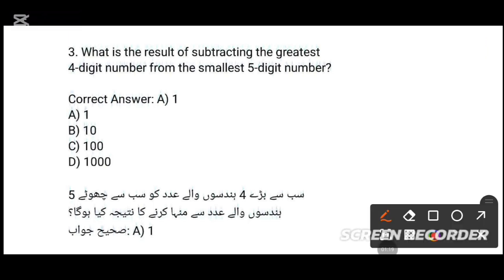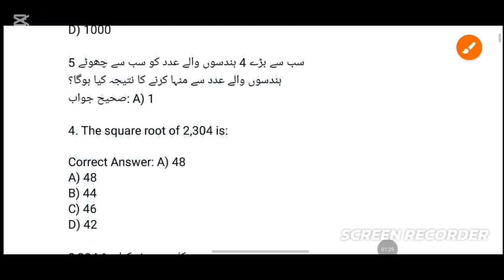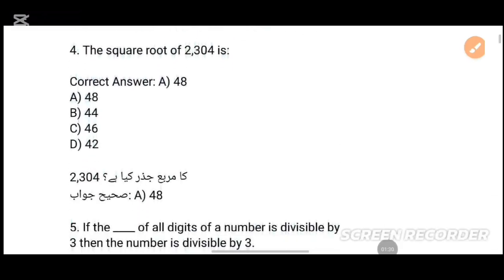So, smallest 5-digit number minus greatest 4-digit number. The answer is A — option A is the correct answer.